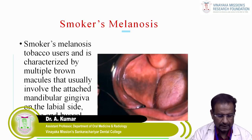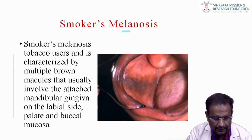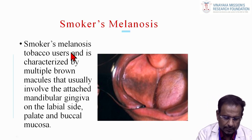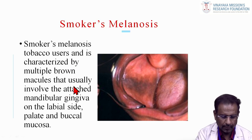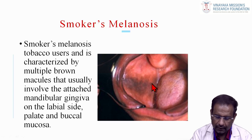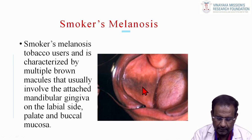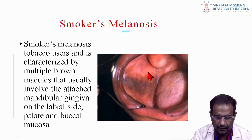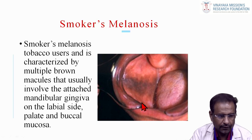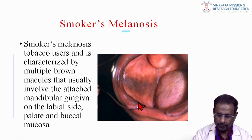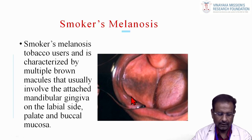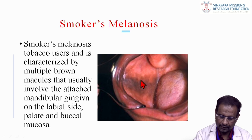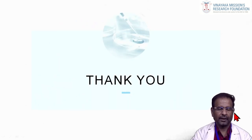Smoker's melanosis is characterized by multiple brown color macules usually involving the attached mandibular gingiva on the labial side, the palate, and buccal mucosa — arising in smokers. There is gray color pigmentation seen in the oral cavity, specifically the buccal mucosa, labial mucosa, and palate. Smoker's melanosis is reversible if the patient stops smoking, but if the habit continues, it is a pre-malignant condition that can progress to cancer. Thank you for listening to my class.